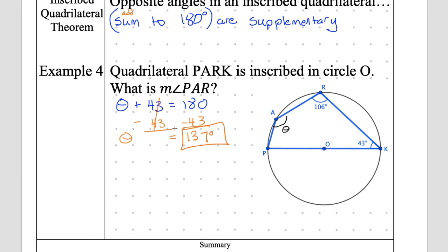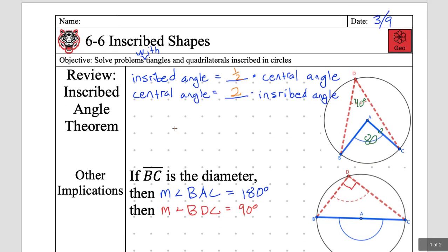Alright, give me a fist of five — how well can you solve problems with triangles and quadrilaterals inscribed in circles? I see fours, fives, threes... give me real numbers. Cohen, you're at a four — I see you.